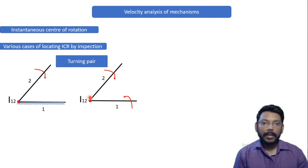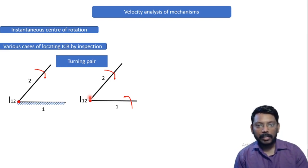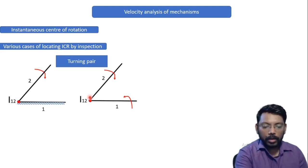So student, all you need to do is look for the intersection point of both the links and that point will become your ICR for the turning pair.